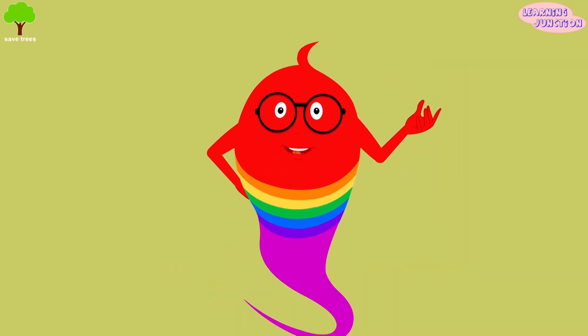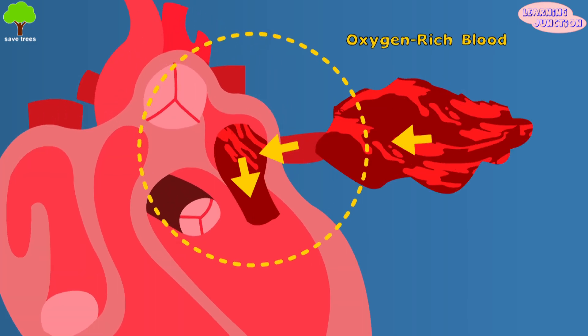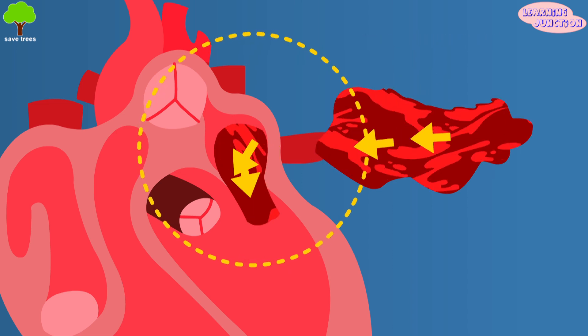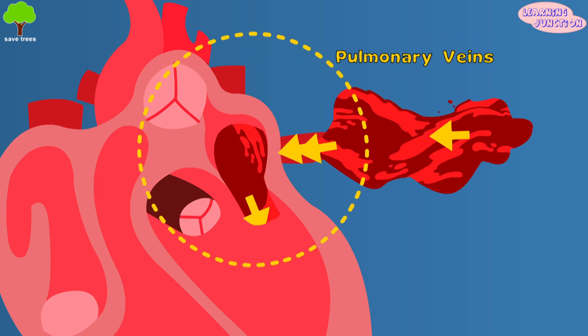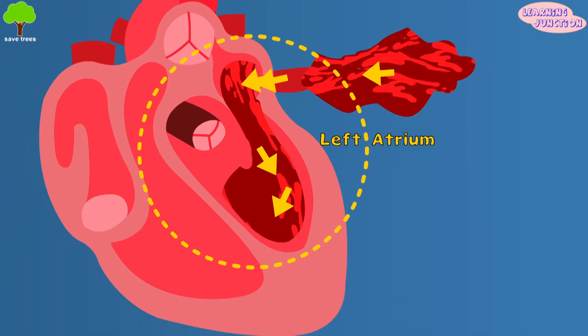Let's understand how our heart works. The function starts when oxygen-rich blood is carried from the lungs to the left atrium of the heart by means of pulmonary veins. The left atrium relaxes and this blood is pumped into the heart.